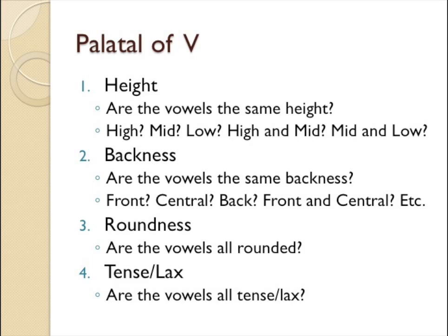If height is not giving you any clue, move on to backness. Ask yourself: are the vowels having the same backness? Are they all front, all central, or all back vowels? Or maybe front and central, or central and back? Just like with height, it is possible for the vowels to be all front and central, or all central and back, and that could still be considered restrictive. As long as it is not having everything at the same time, that sound still has some kind of restriction and you would want to make a note.